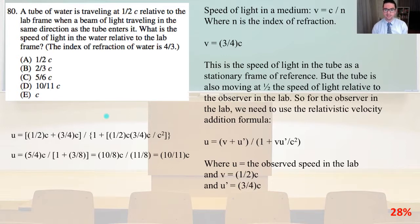This is the speed of light in the tube as a stationary frame of reference. But the tube is also moving at 1 half the speed of light relative to the observer in the lab. So, for the observer in the lab, we need to use the relativistic velocity addition formula, where u equals the quantity v plus u prime divided by the whole quantity 1 plus the quantity v u prime divided by c squared. Where u equals the observed speed in the lab, and v equals 1 half c, and u prime equals 3 fourths c.